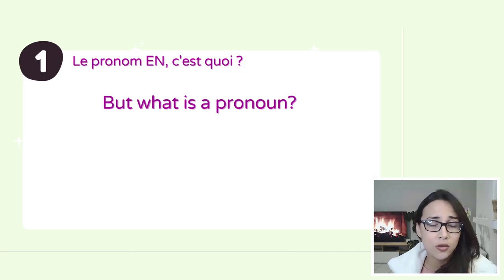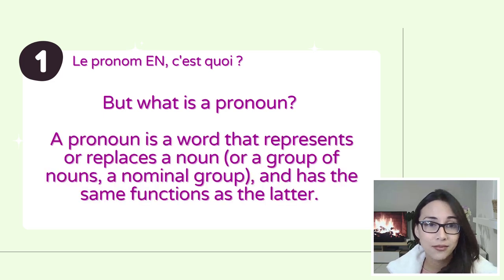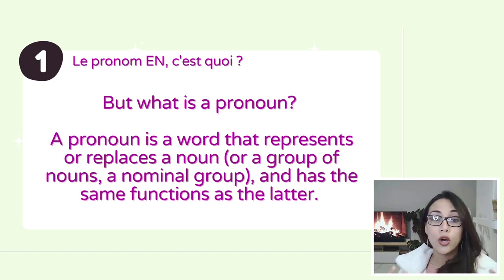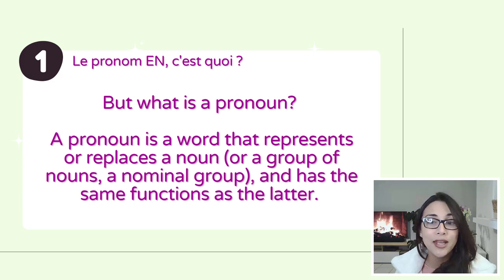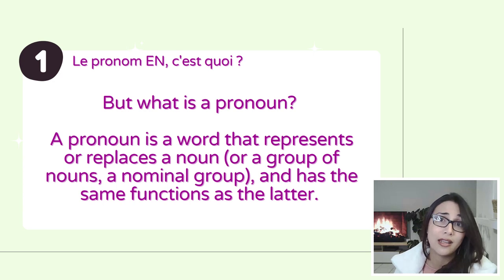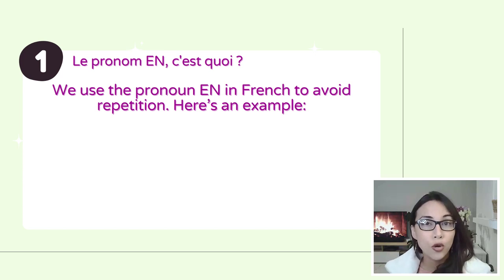So before I talk to you a bit more about the pronoun EN — what is it, and what is a pronoun? Un pronom, qu'est-ce que c'est? A pronoun is a word that represents or replaces a noun, but it can also replace a group of nouns, which we call a nominal group — un groupe nominal. It has the same function as the noun or group of nouns it is replacing. We use the pronoun EN in French to avoid repeating, so to avoid repetition.